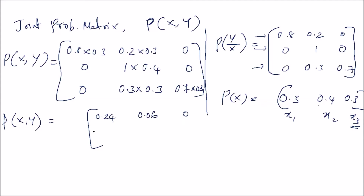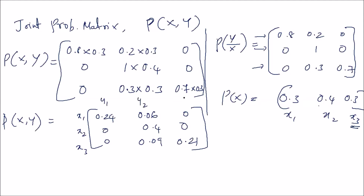The joint probability matrix P(XY) is: [0.24, 0.06, 0; 0, 0.4, 0; 0, 0.09, 0.21]. To check correctness, the sum of all entries should equal one. The probabilities P(y1), P(y2), P(y3) can now be obtained by adding the columns of P(XY). Adding each column gives us the corresponding output probabilities.